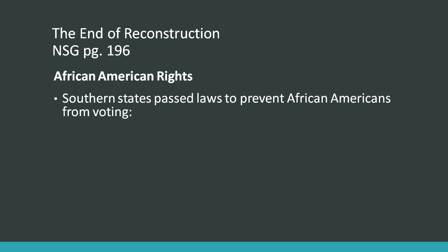Southern states passed laws to prevent African-Americans from voting towards the end of Reconstruction. You had literacy tests — you had to be able to read. You had a poll tax — you had to pay a tax to actually vote, so it stopped the poor. And then you also had the grandfather clause, meaning that if your grandfather voted, you could vote. Well, since no freed African-American slaves had grandfathers that could vote, they were barred from voting.